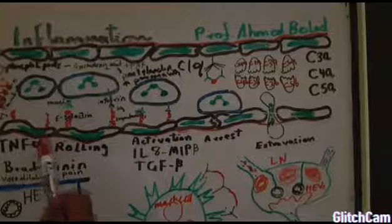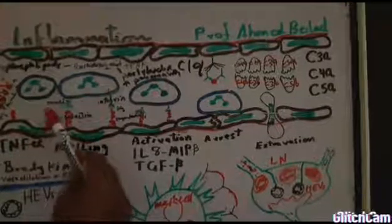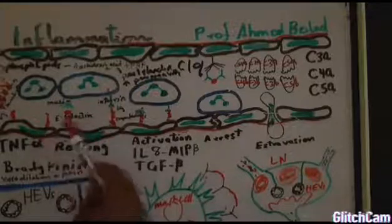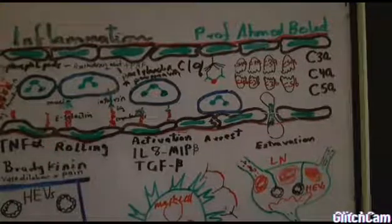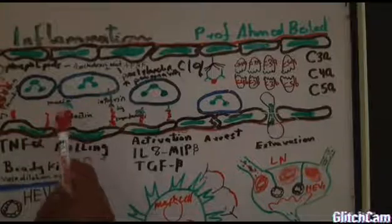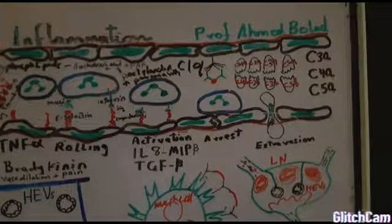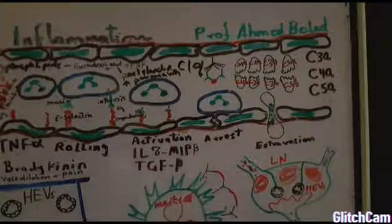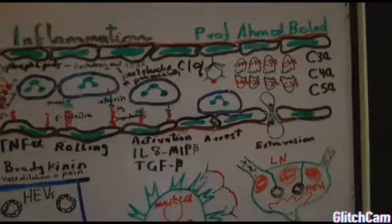TNF-alpha induces adhesion molecules on the surface of the endothelial cells. Some of these adhesion molecules are constitutively expressed on the surface, but others need cytokines to be expressed, usually following an inflammatory process. Chemokines are cytokines that attract neutrophils or white blood cells from the circulation to the site of inflammation.